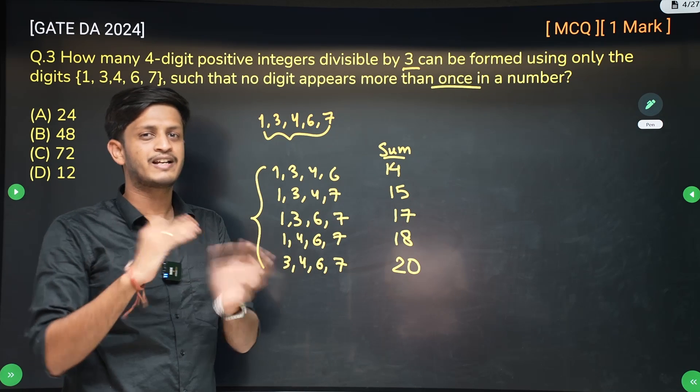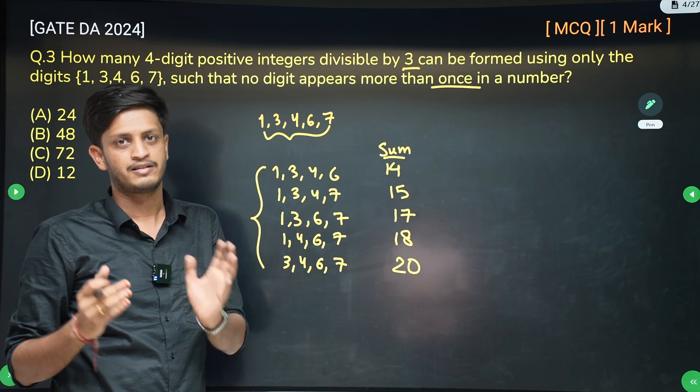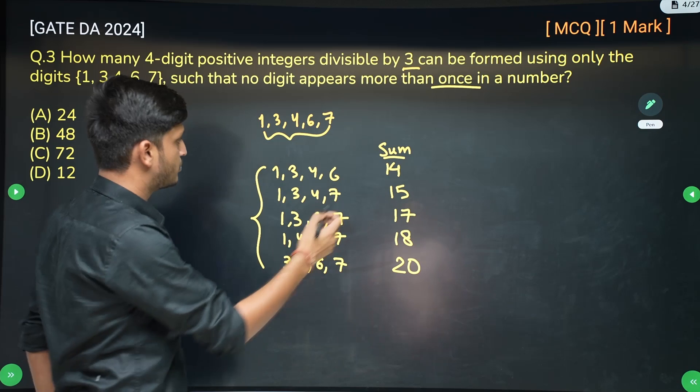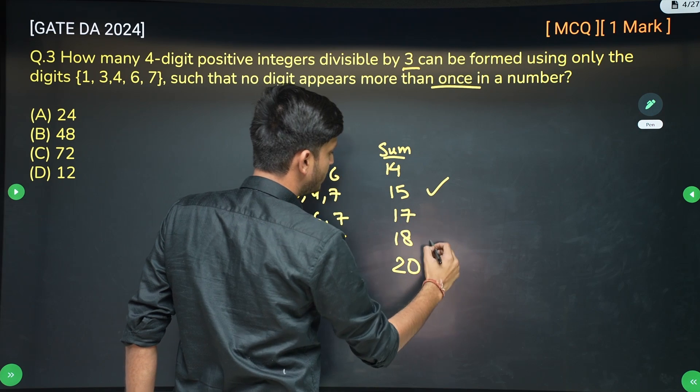Now for all the digits for which the sum is divisible by 3, we can take all such digits and we can arrange them in any order. It doesn't matter. Like the number will be divisible by 3, correct? So see, 15 is divisible by 3 and 18 is divisible by 3.